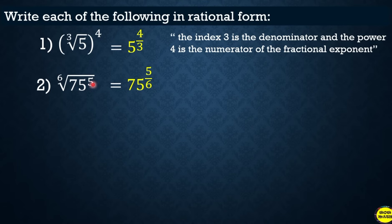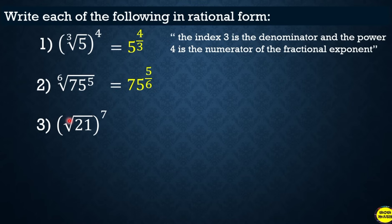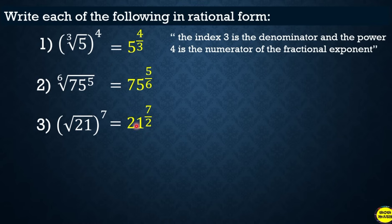Another example: the square root of 21, raised to 7. When no index is shown, it is understood to be 2. So the index 2 becomes the denominator and 7 becomes the numerator. The answer is 21 raised to 7 over 2.